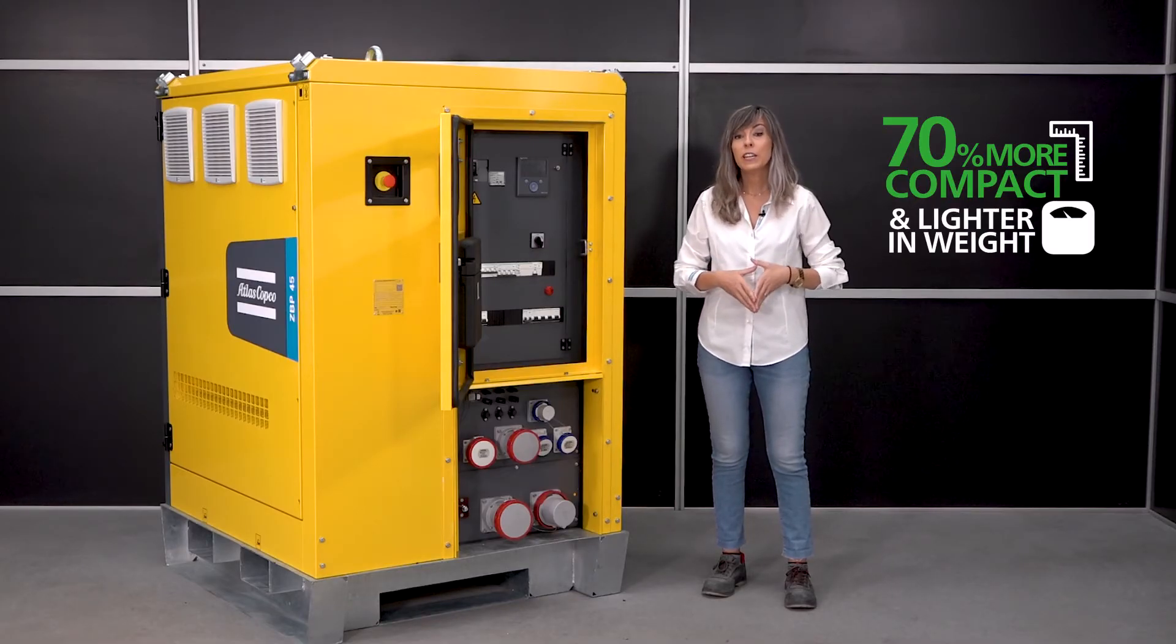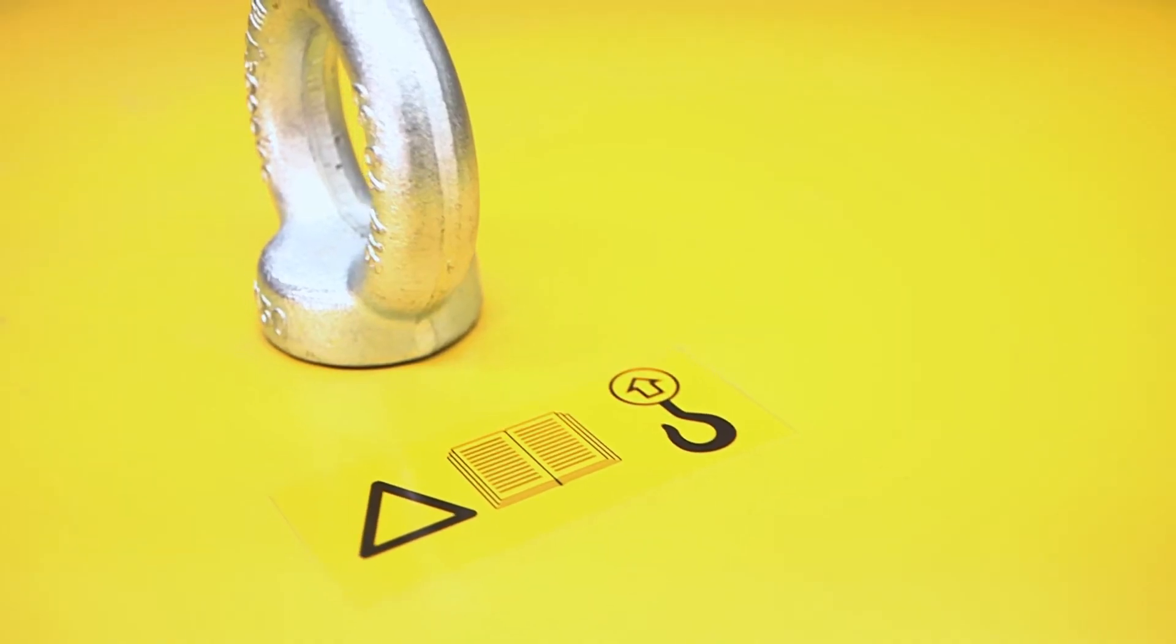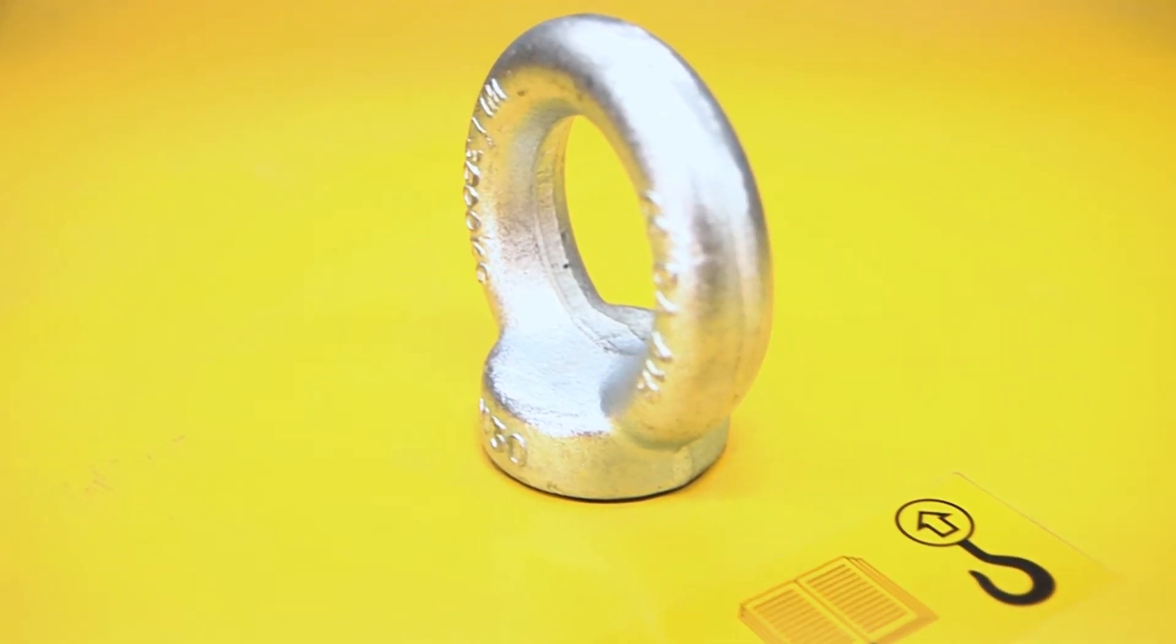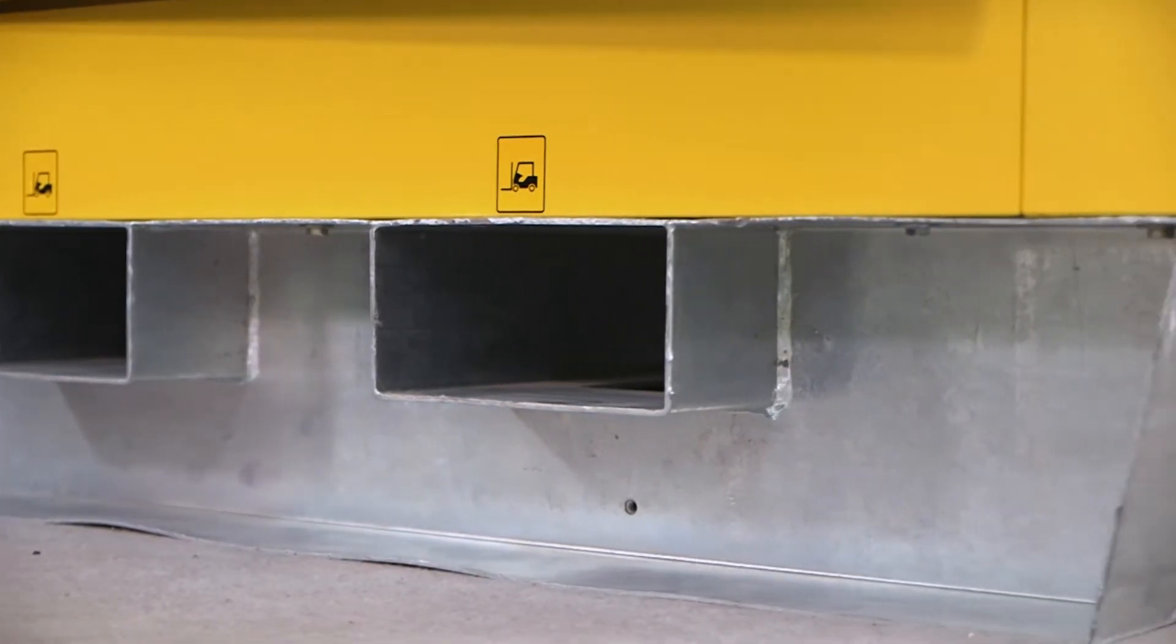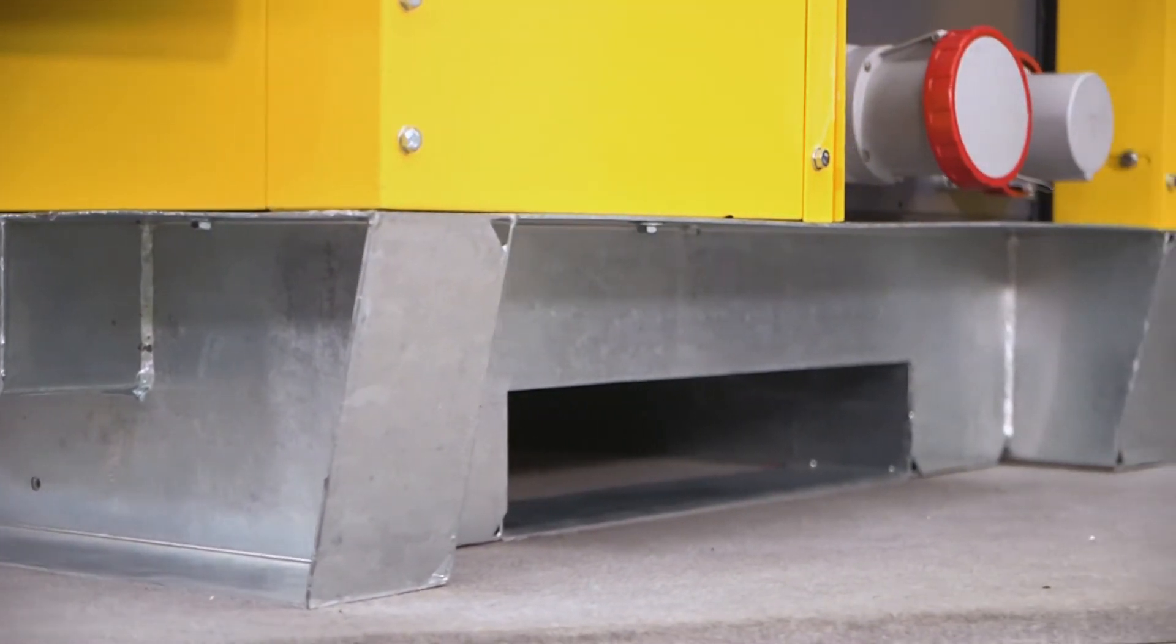Of course, there are many different points to transport it, such as the top of the roof with the lifting eye, and above we have the different forklift slots.